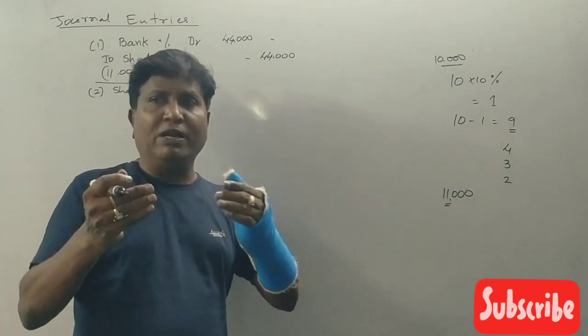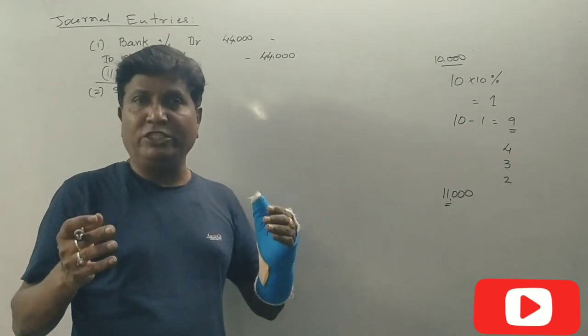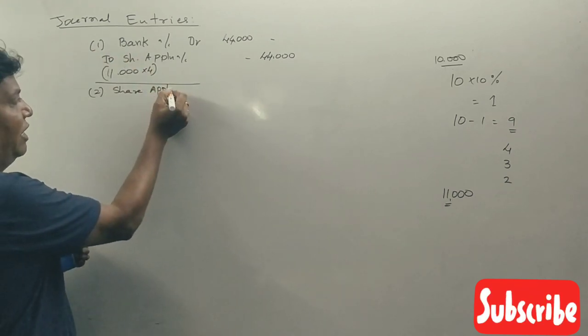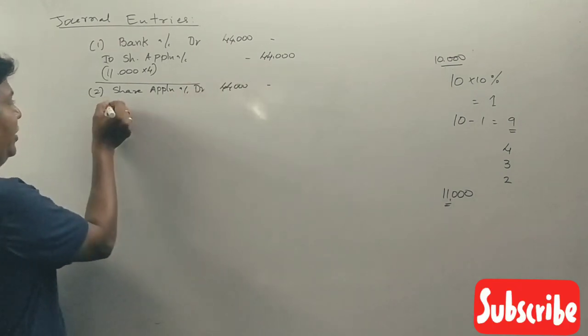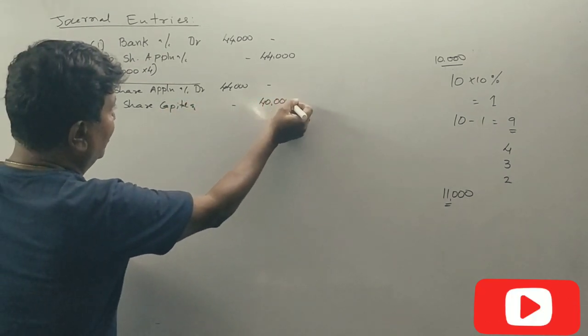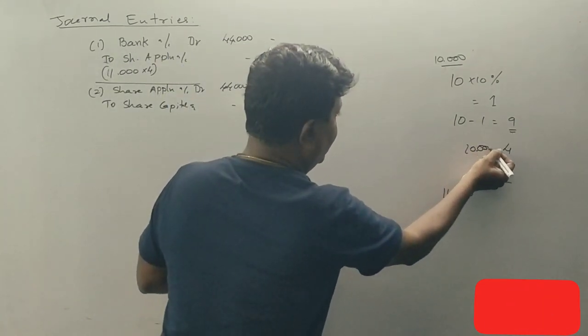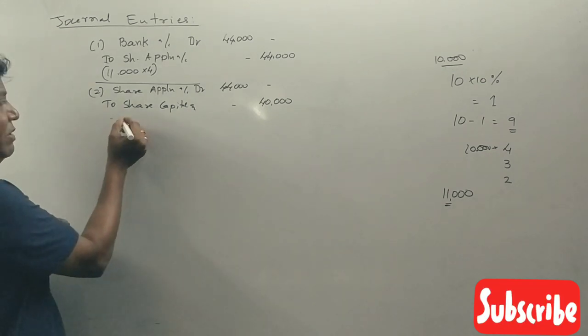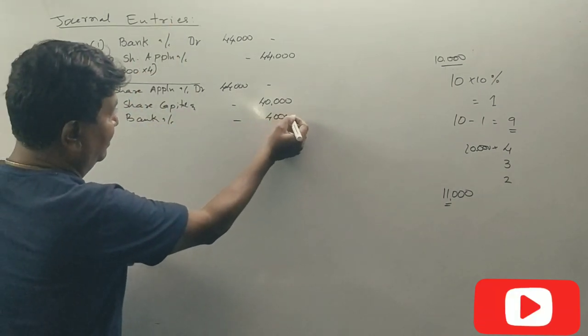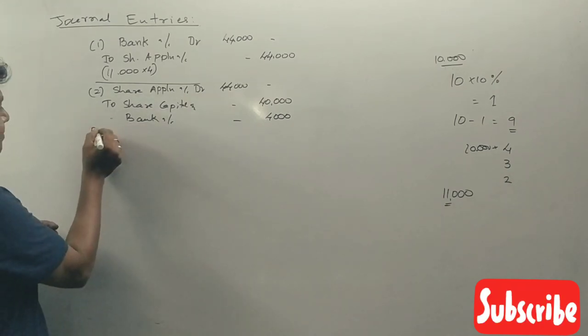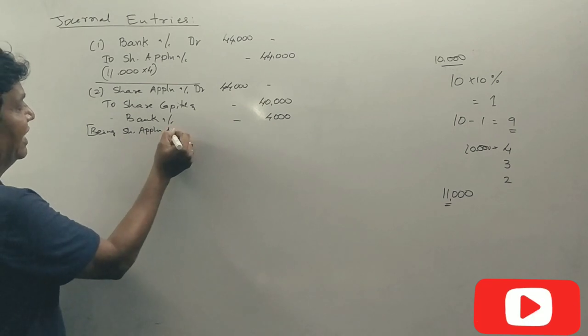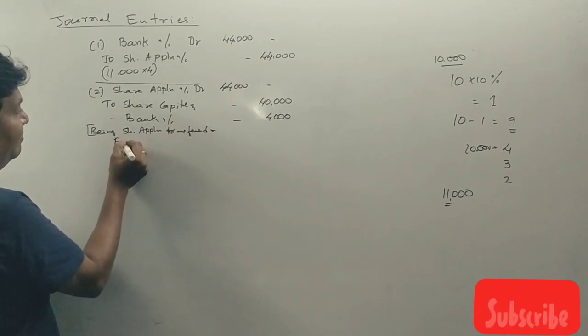Share Application Account 44,000. Share Capital transfer 40,000 for 10,000 shares at 4 rupees. Bank Account for refund 4,000 for 1,000 shares. Being share application transferred and excess refunded.